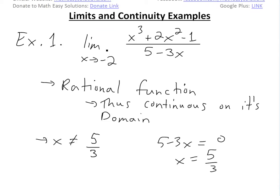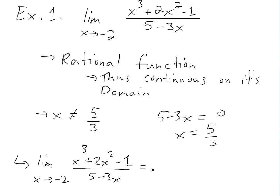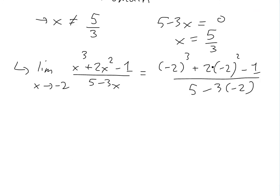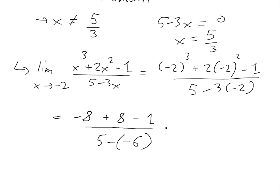Since it's defined everywhere except x = 5/3 (where you'd divide by 0), and negative 2 is not 5 over 3, we can directly plug in. So we get negative 2 cubed plus 2 times negative 2 squared minus 1, all divided by 5 minus 3 times negative 2. That gives negative 8 plus 8 minus 1 in the numerator, which is negative 1, and 5 minus negative 6 equals 11 in the denominator. So the answer is negative 1 over 11.